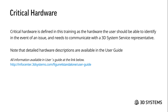Critical hardware is defined in this training as the hardware that the user should be able to identify in the event of an issue and needs to communicate with a 3D Systems service representative. Note that detailed hardware descriptions are available in the user guide — this training will not identify every component, but there are general parts that if a user has an issue and makes a service call, everyone should be able to identify the name of that component. There are links to the standalone user guide and the modular system user guide.